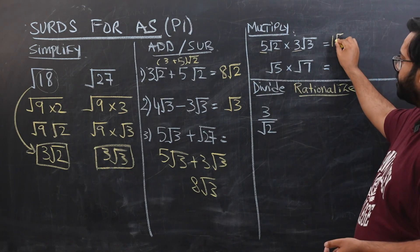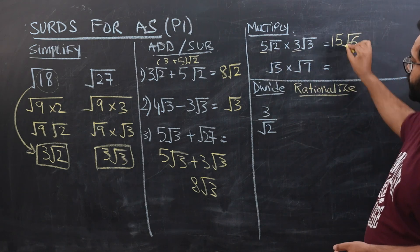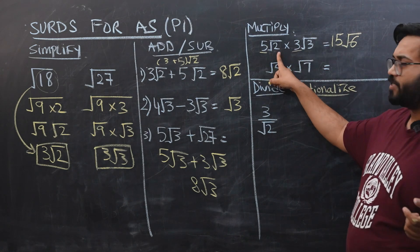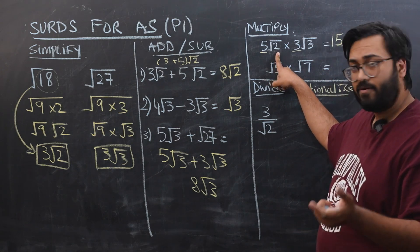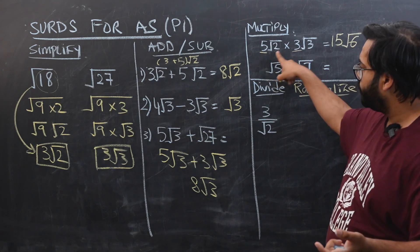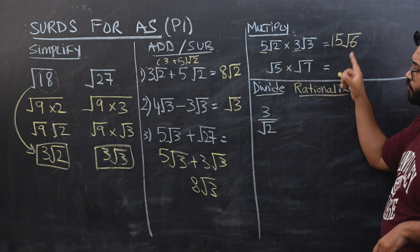And under root 2 into under root 3 would become under root 6, because the square root is basically a power and you can take the power common while multiplication. So under root 2 into under root 3, the under root will become common, so 2 times 3 would become 6.